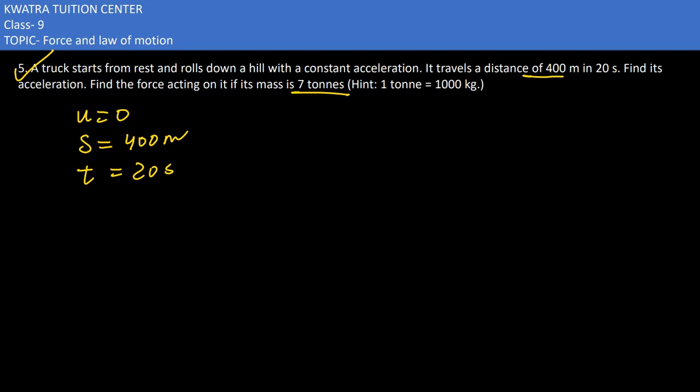As u, s, and t are given, which formula must we use? s equals ut plus half at squared. So s in this case is 400, u in this case is 0 multiplied by t, half is there, a is not known, t squared would be 20 squared.